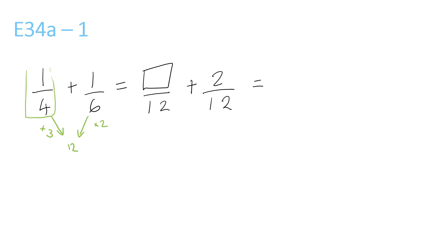So this 1 over 4, we have to times the top and bottom by 3 to get 3 over 12. The 1 over 6, we have to times the bottom by 2 and the top by 2. Now we do 3 plus 2 is 5 over 12.